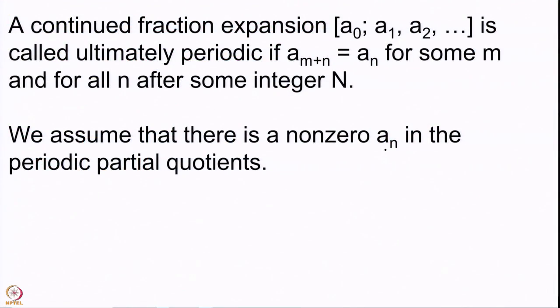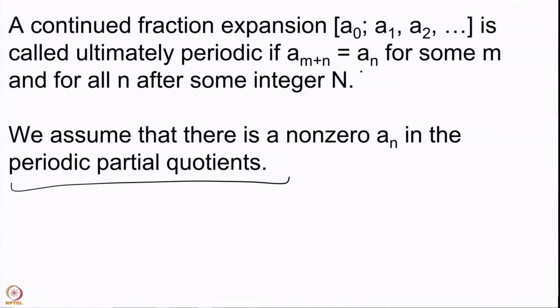What we are also going to assume is that in these expansions we do not have all aₙ equal to 0. Because after all, a rational number is given by a finite expansion, and then you can assume the corresponding aₙ's are 0; but we will assume there is no such situation, meaning some aₙ has to be non-zero. So it is an expansion which does not terminate, and therefore it is going to represent an irrational number. This is our standing assumption: when n goes to infinity the aᵢ are non-zero, and therefore any such expansion will give you an irrational number.